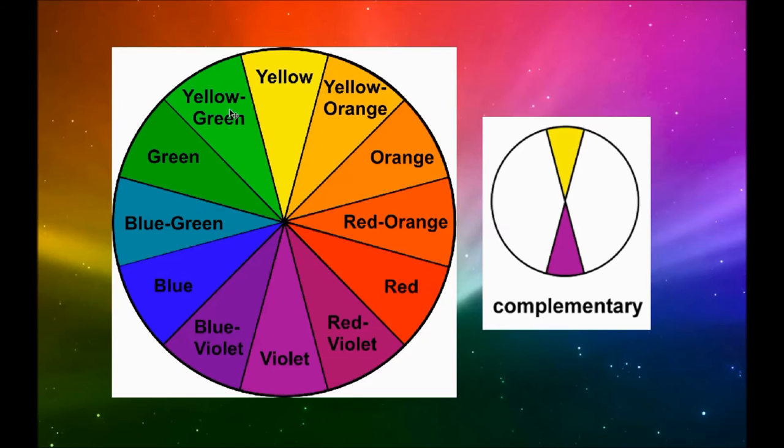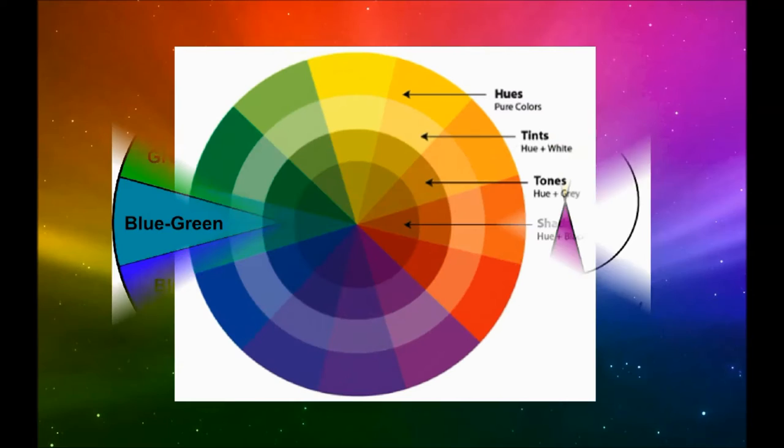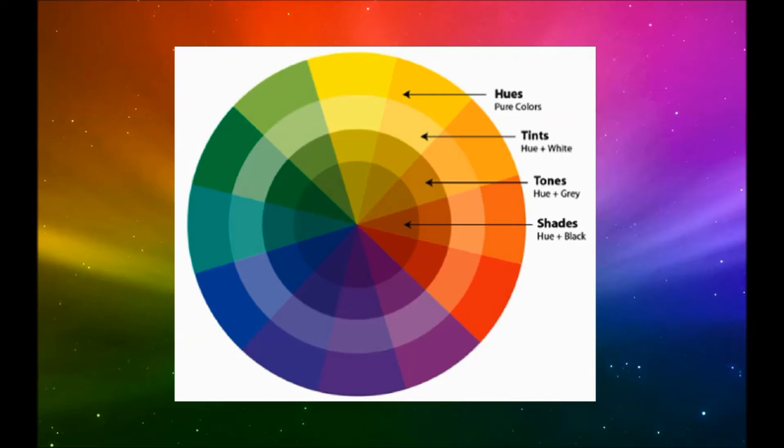Colors are not just colors themselves. They have tints and tones and shades. So let's talk a little bit about how you get a tint, a tone, and a shade. Our regular colors, for instance our yellow, is the hue. It's basically the pure color, the name of the color.